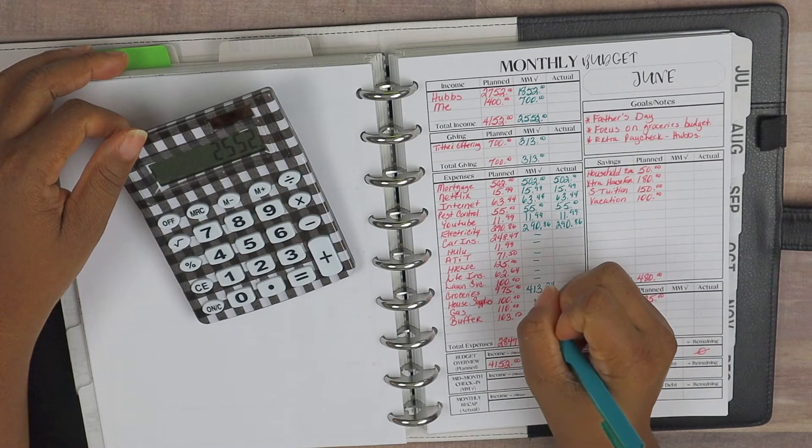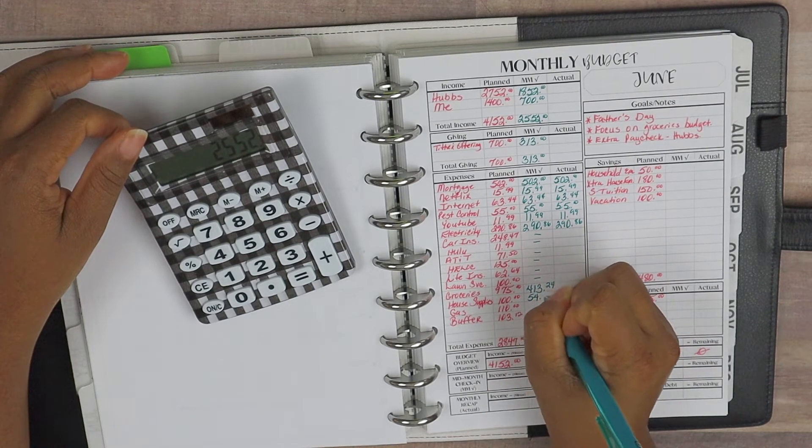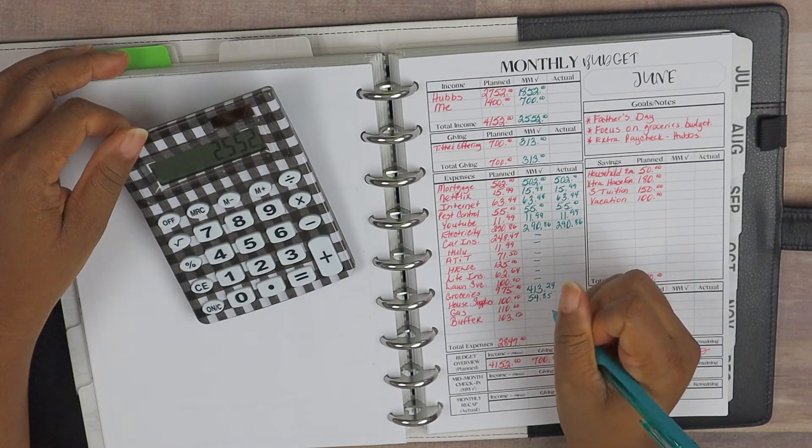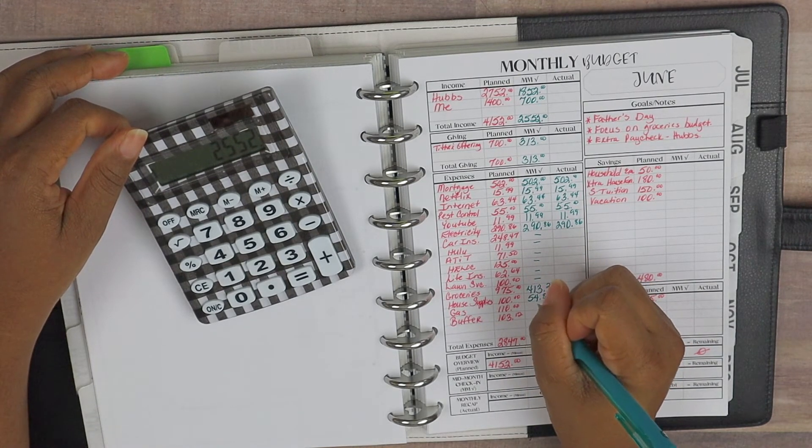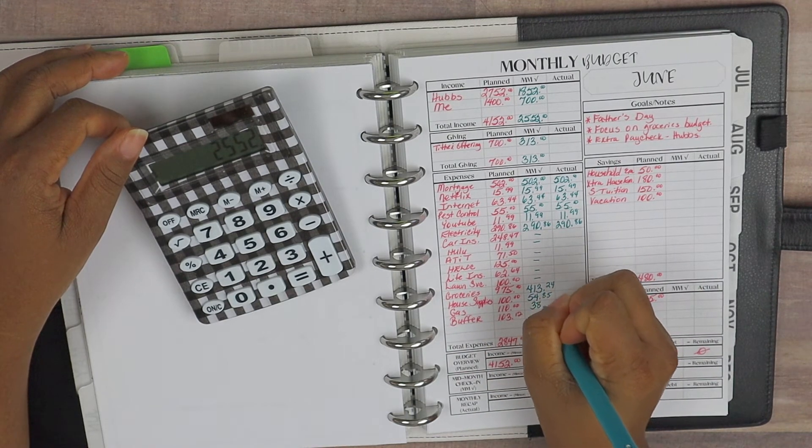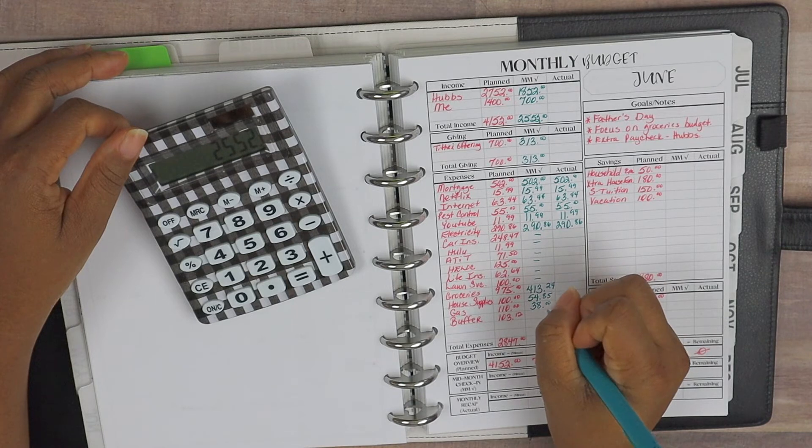And then for our house supplies, we've come in at $54.85. So we do have a total of $100 planned for the month of June, so we're hoping that we do stay under in that category.